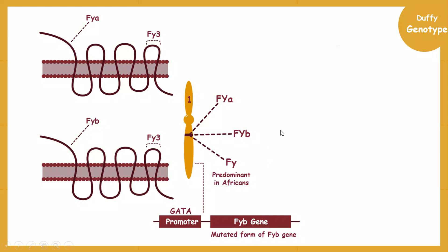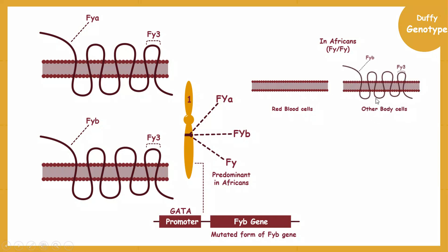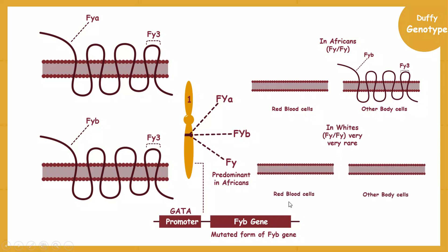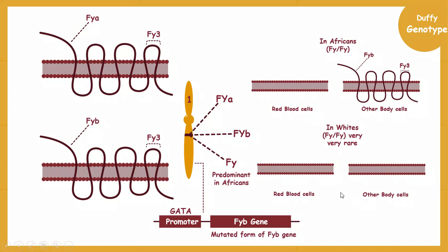In the African population, since they mainly carry the mutated FYB allele, Duffy glycoprotein is not expressed on red blood cells, so FYB and FY3 antigens are absent from red blood cells. However, African population does express Duffy glycoprotein on other body cells such as brain and lungs, so FYB and FY3 antigens are expressed there. In contrast, in white populations, the recessive allele is very rare and involves different mutations that result in loss of Duffy glycoprotein expression on both red blood cells and other body cells, meaning white individuals with the null phenotype do not express any Duffy antigens — FYA, FYB, or FY3.